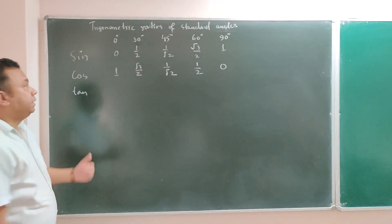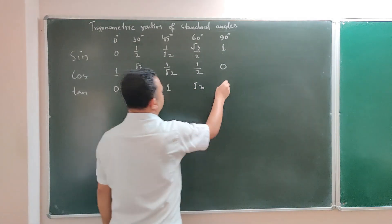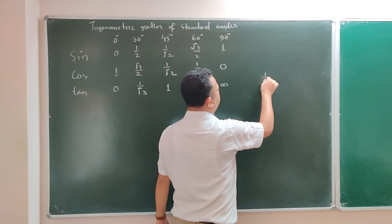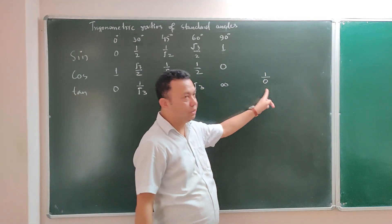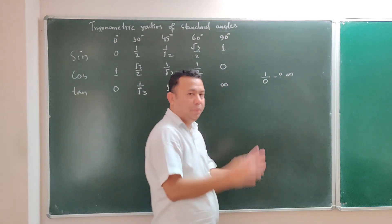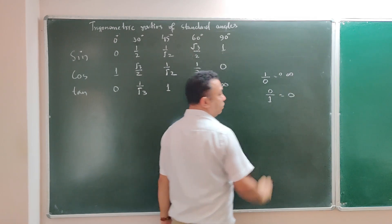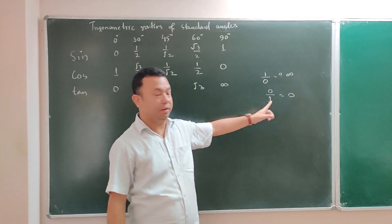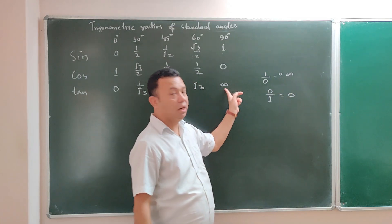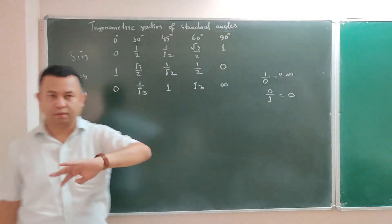Tan 0° is 0, tan 30° is 1/√3, tan 45° is 1, tan 60° is √3, and tan 90° is undefined. When any number is divided by 0, we don't have the answer, so we call this undefined. Whereas when 0 is divided by any number, the answer is 0. There is a difference between dividing by 0 and 0 being divided. You should know that 0 is the reciprocal of undefined, and undefined is the reciprocal of 0 — they are reciprocal to each other.